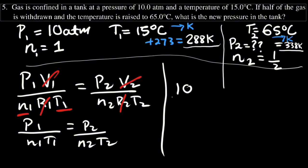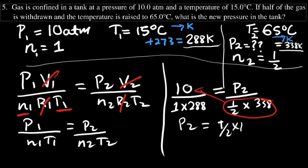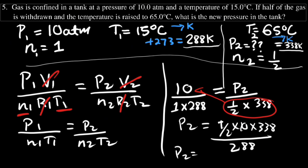Substituting: 10 / (1 × 288) = P2 / (0.5 × 338). Cross multiplying gives P2 = (0.5 × 10 × 338) / 288, which gives us a pressure of approximately 5.87 atm.